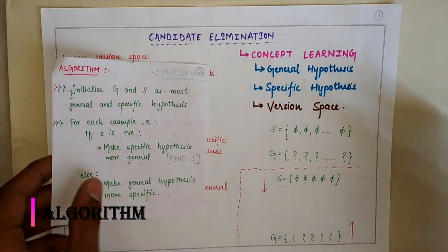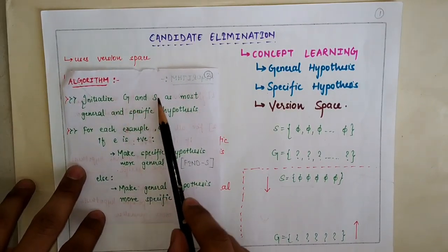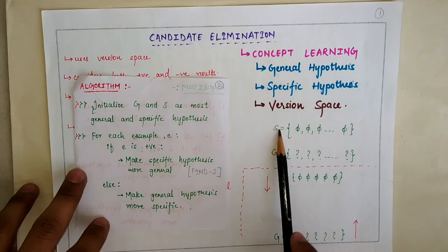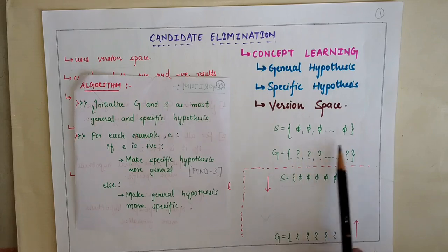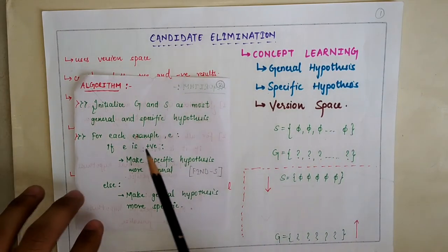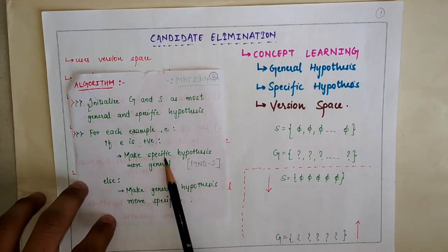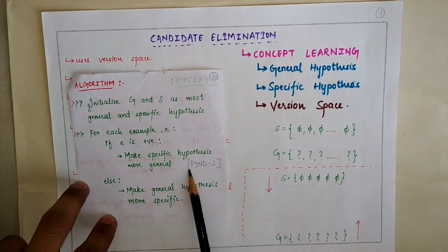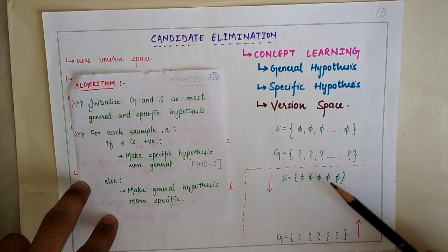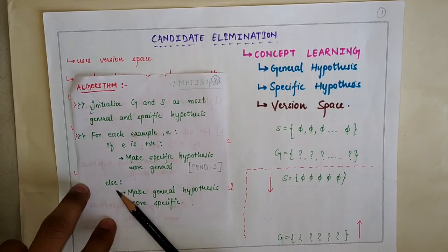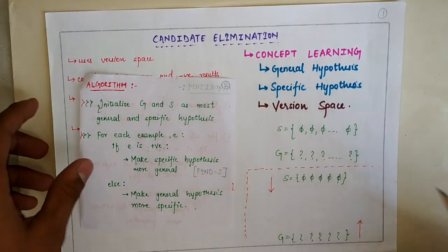In the algorithm, the very first step is to initialize your general as well as specific hypothesis, denoted by G and S. The number of attributes in the dataset determines the number of question marks or 'phi' symbols used. For each example: if it is positive, make the specific hypothesis more general; if it is negative, make the general hypothesis more specific.